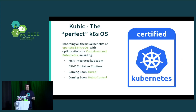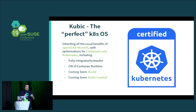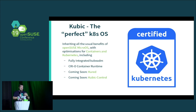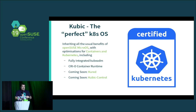But with Cubic, because it's based on MicroOS and adopting this principle of single-purpose operating systems, it's basically the perfect Kubernetes operating system. With a Tumbleweed base, the moving-quickly part is totally solved — we can move as fast as all the upstreams and integrate the latest stuff from upstream right away.